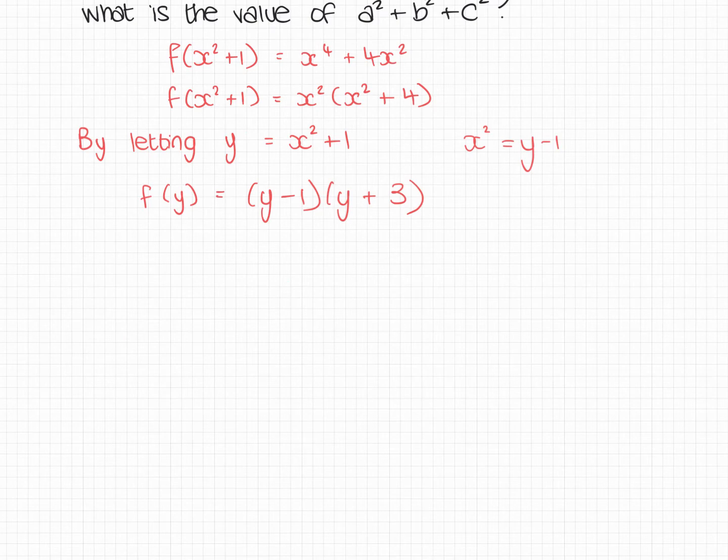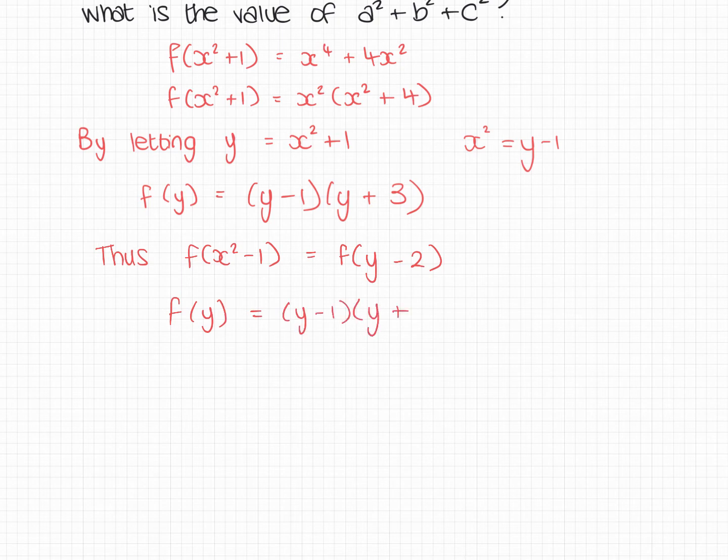And I'm going to do the same thing now and say, well, if that's f of y. If I'm looking at f of x squared minus 1, how could I turn that into something in terms of y? So x squared minus 1. So if x squared is y minus 1, x squared minus 1 would be y minus 2.